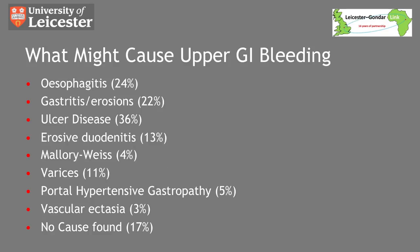This slide shows the endoscopic findings of patients who presented with upper GI bleeding during the UK National Upper GI Bleed Audit in 2007. Not all of these will be the cause of the bleed, but it's worth noting that ulcers were found in 36% of patients and varices in 11%. The incidence of varices had increased from 4% only 10 years previously and it's likely to continue to increase.